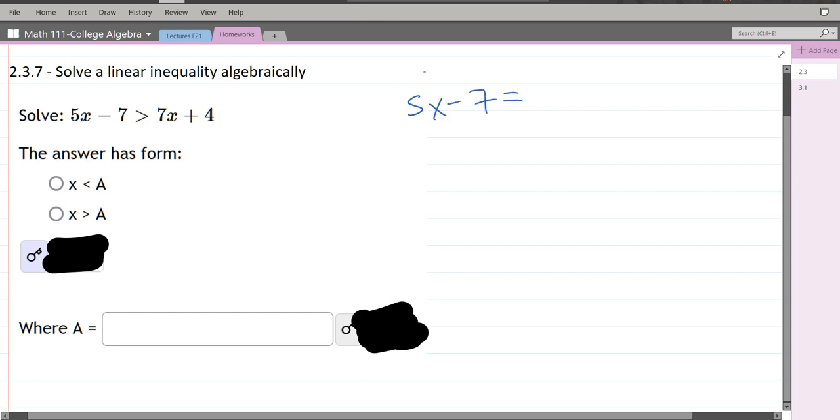So let's first start by rewriting. x appears twice. We want x to appear once, so what I'm going to do is subtract 5x on both sides.